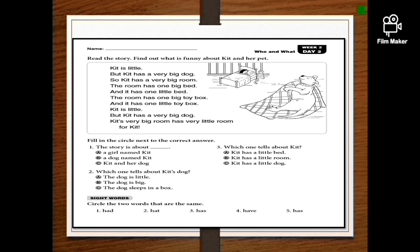Kit is little, but Kit has a very big dog. So Kit has a very big room. The room has one big bed and it has one little bed. The room has one big toy box and it has one little toy box.